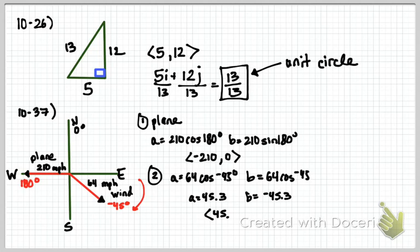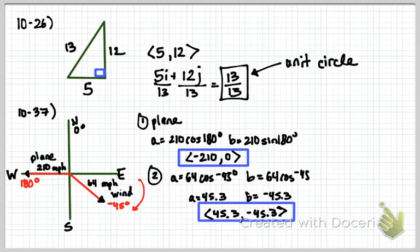So our components here, 45.3, negative 45.3. Now, once we have our component forms for both, we're going to add these together. Negative 210 plus 45.3. We get our resultant.